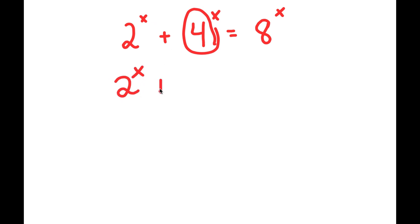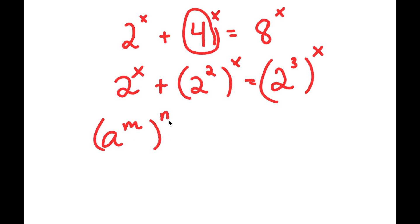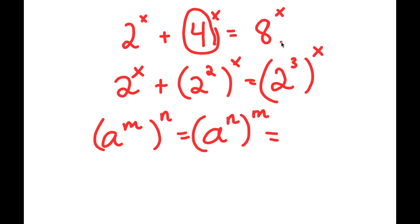So I have 2 to the power of x plus 2 squared to the power of x is equal to 2 to the power of 3 to the power of x. Now, if I have something in the form a to the power of m to the power of n, this is equal to a to the power of n to the power of m, and also equal to a to the power of m times n.